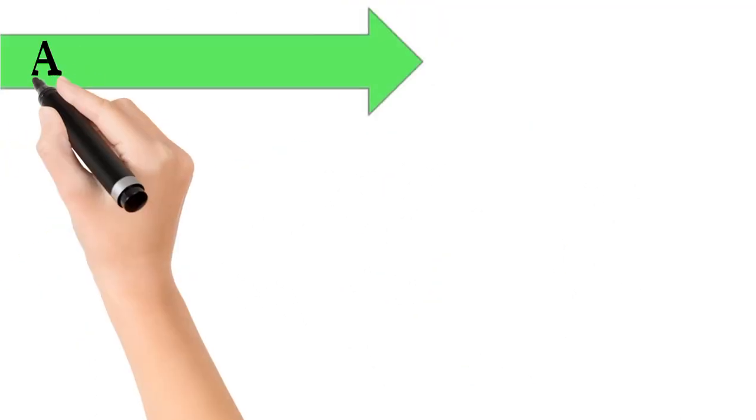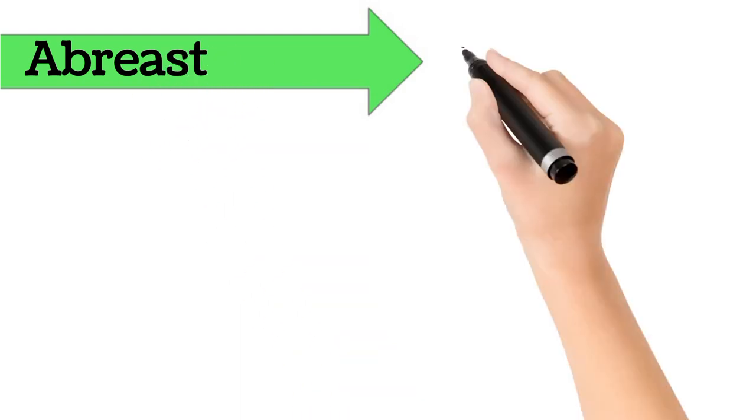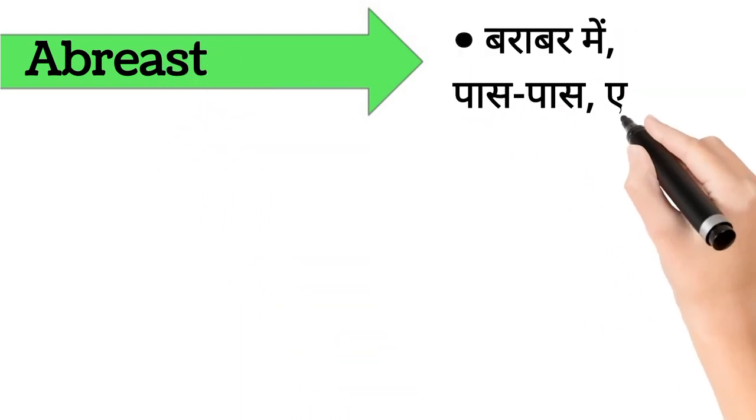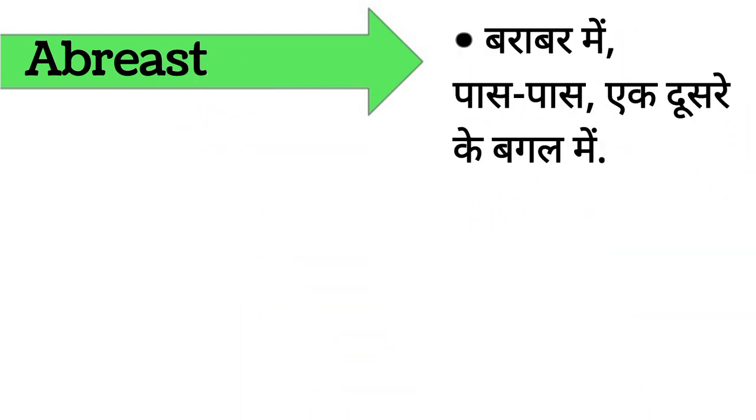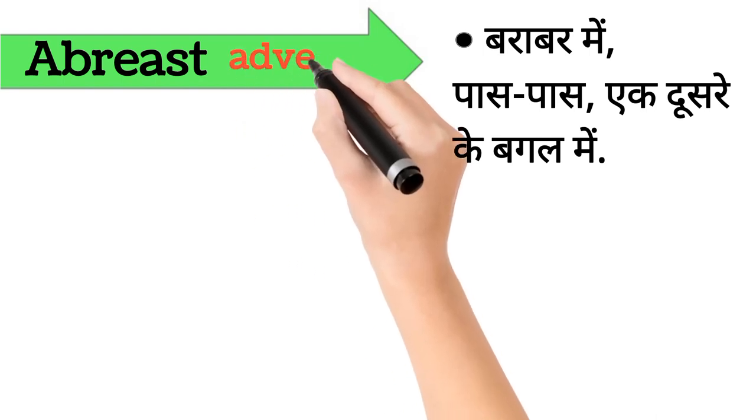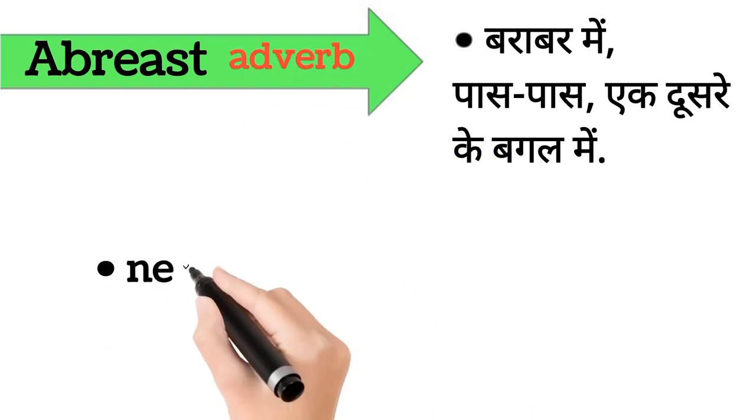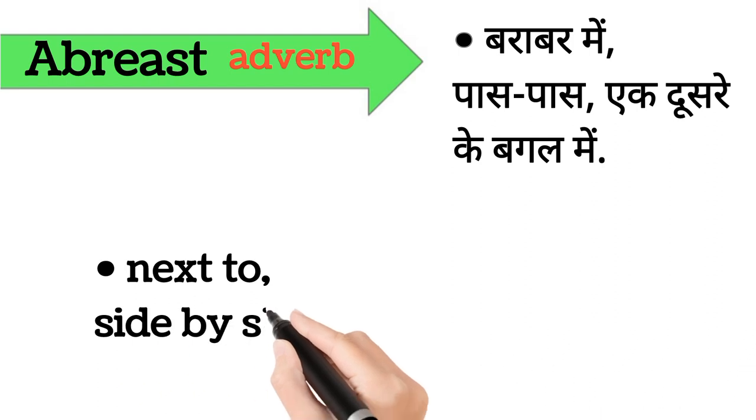Abreast. Abreast ka arth hai, barabar mein, paas-paas, ek dusre ke bagal mein. Abreast word adverb form mein aata hai. It's also called, next to, side by side.